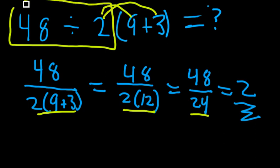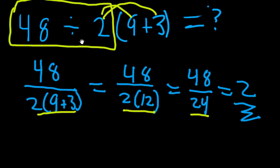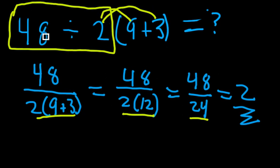What really happens is right here. This is the first step in the problem: you are supposed to take your 48 and divide by 2, and then multiply this by 12.